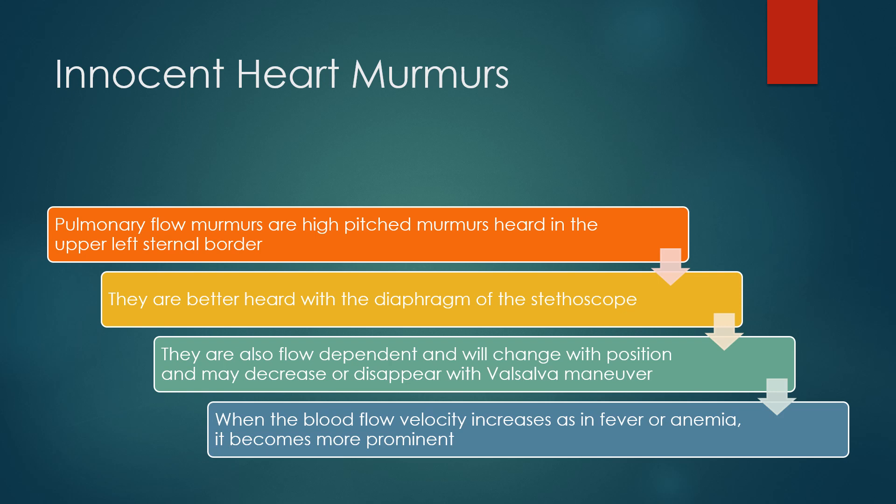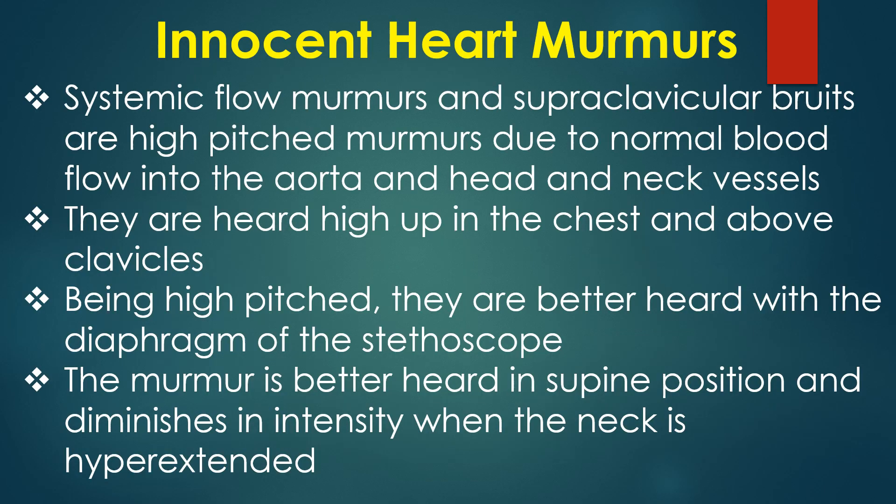Pulmonary flow murmurs are high-pitched murmurs heard in the upper left sternal border, better heard with the diaphragm. They are also flow dependent, change with position and may decrease or disappear with Valsalva manoeuvre. They become more prominent when blood flow velocity increases, as in fever or anemia. Systemic flow murmurs and supraclavicular bruits are high-pitched murmurs due to normal blood flow into the aorta and head and neck vessels, heard high up in the chest and above the clavicles, better heard with the diaphragm.